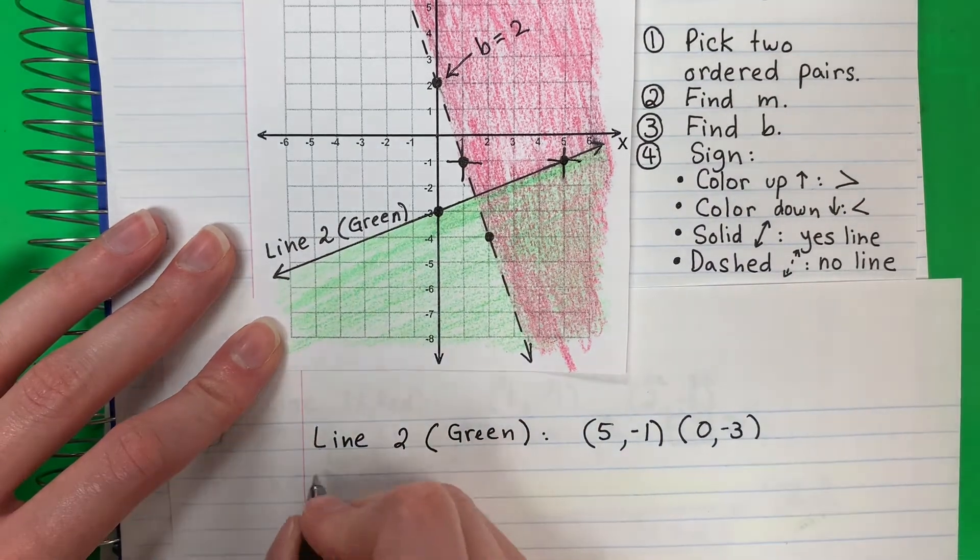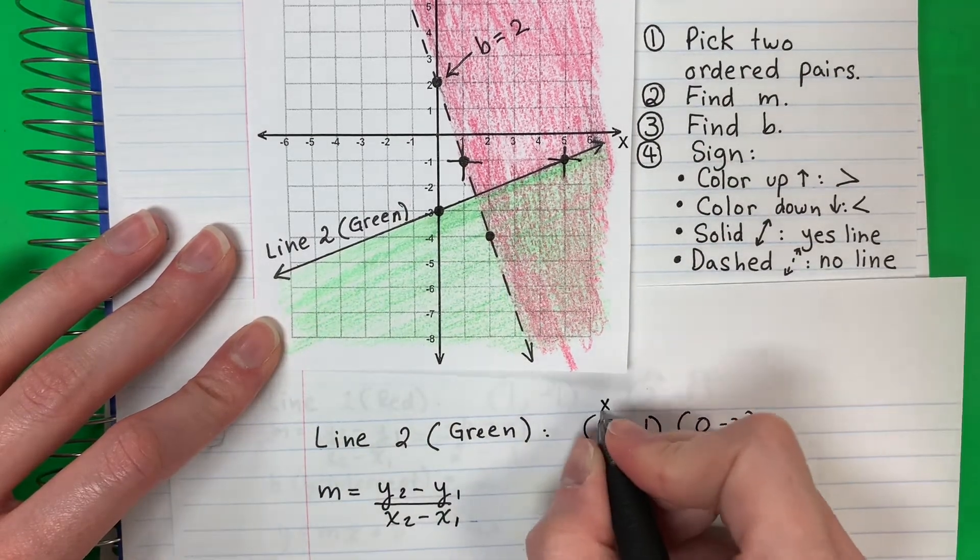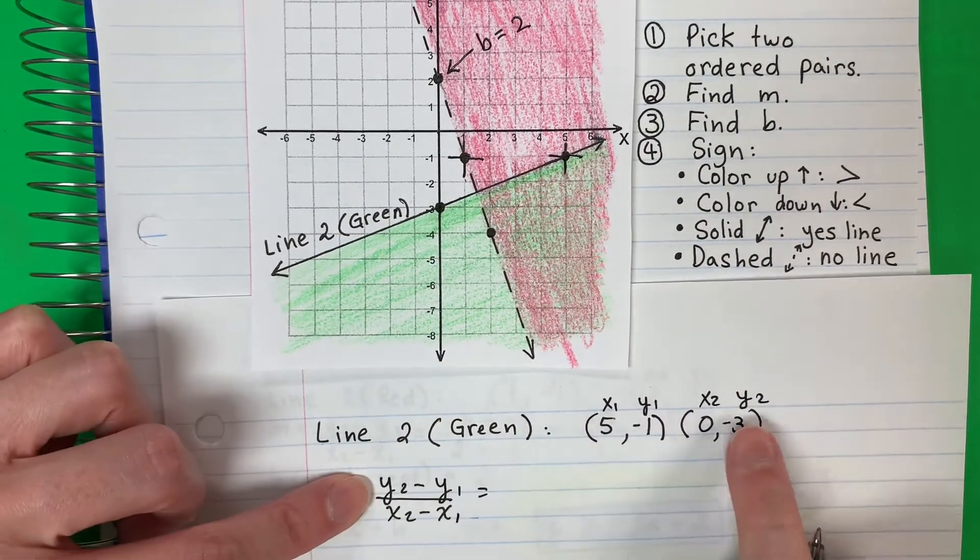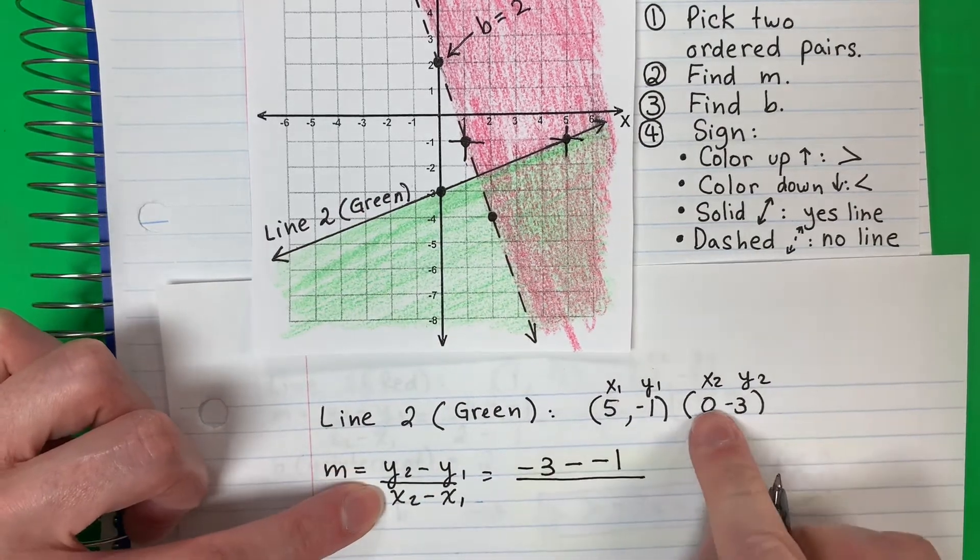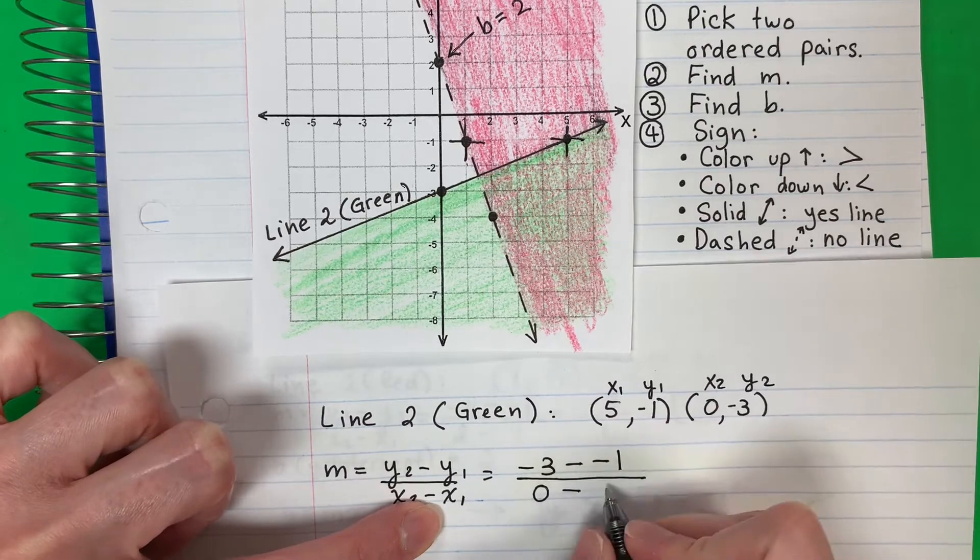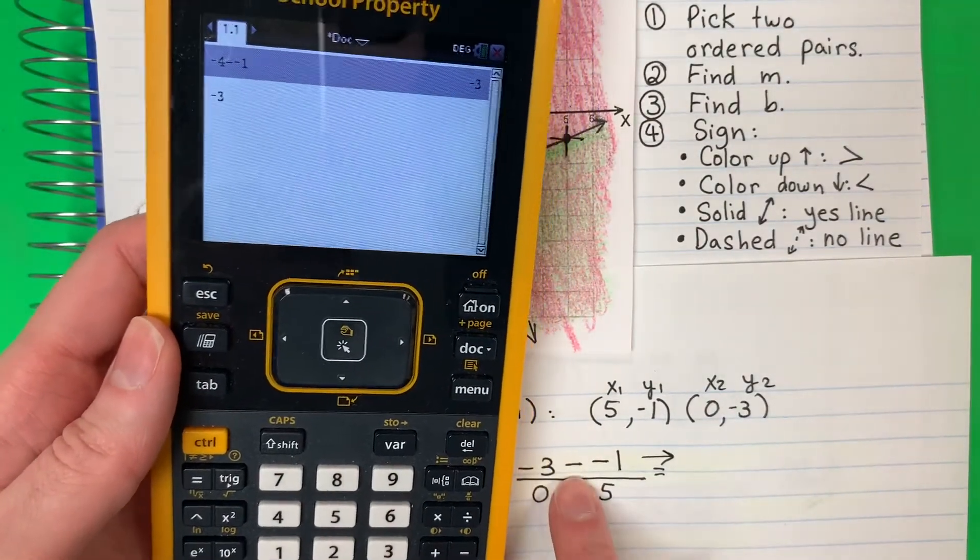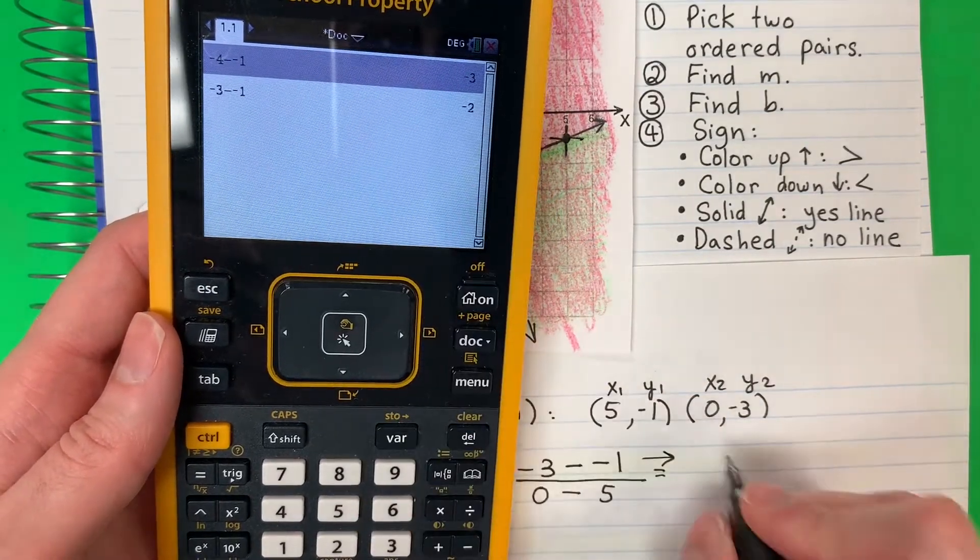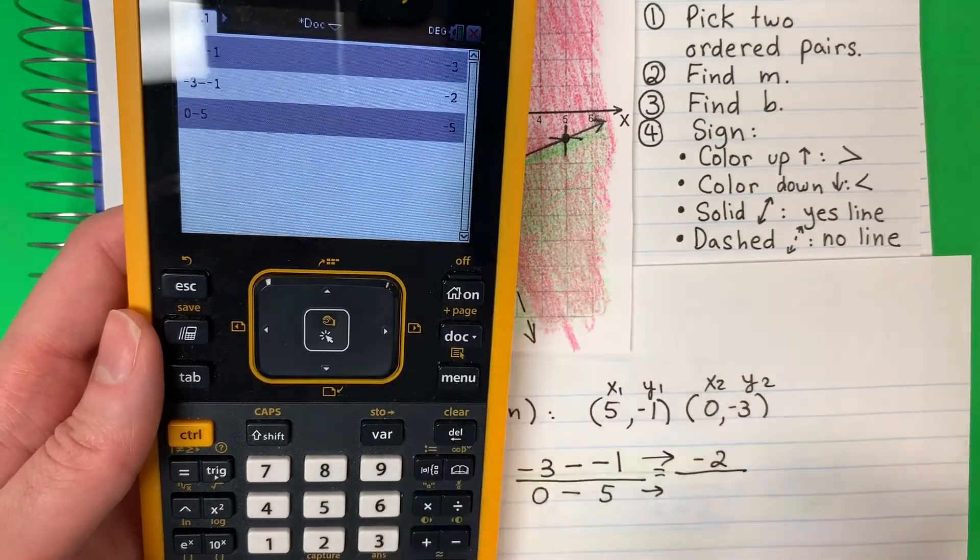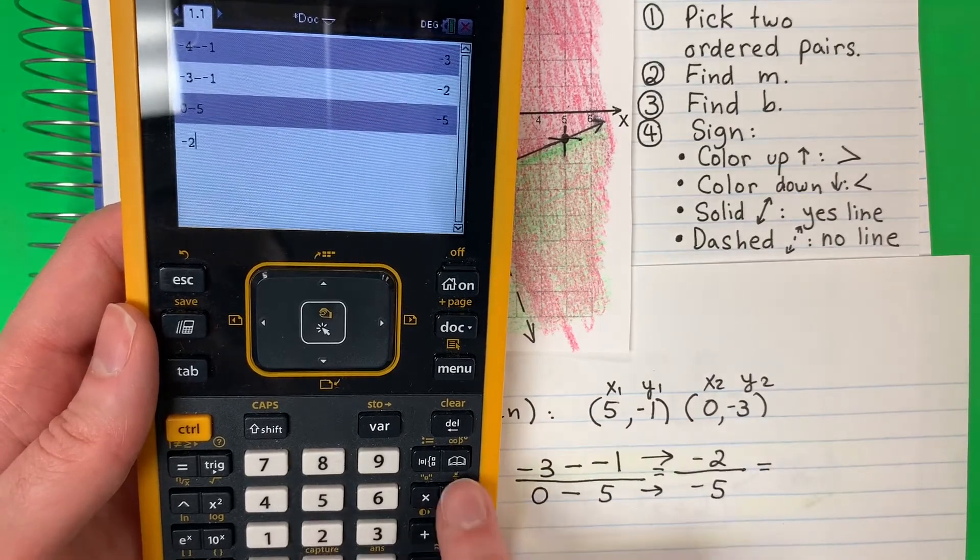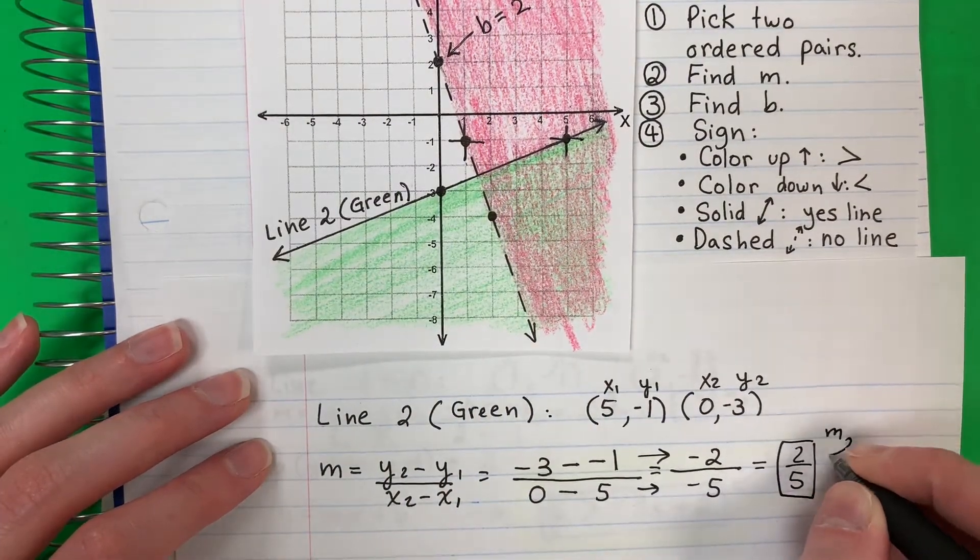Next I need to find m, the slope. M equals y2 minus y1 divided by x2 minus x1. Y2 negative 3 minus y1 negative 1. Divide. x2, 0 minus x1 is 5. Let's put this part in the calculator. Negative 3 minus minus 1, and I get negative 2. 0 minus 5 is negative 5. Let's put all of this in the calculator. Negative 2 divided by negative 5 equals positive 2 fifths. This is my m for line 2.